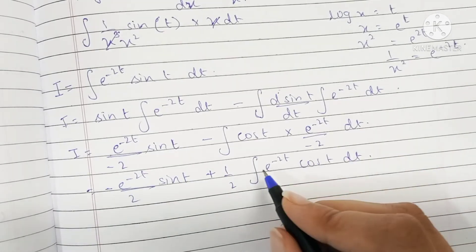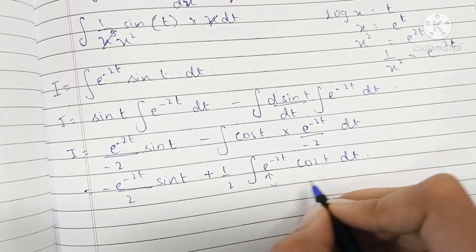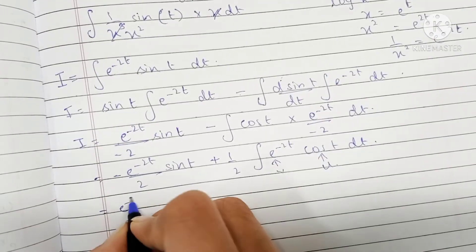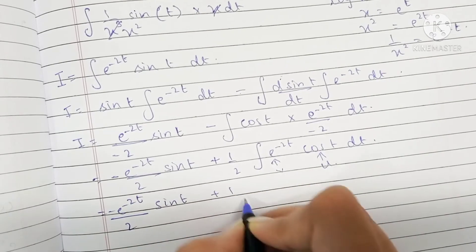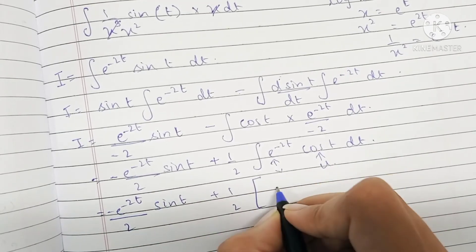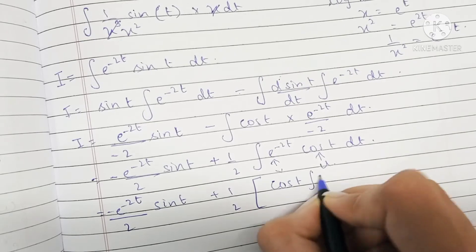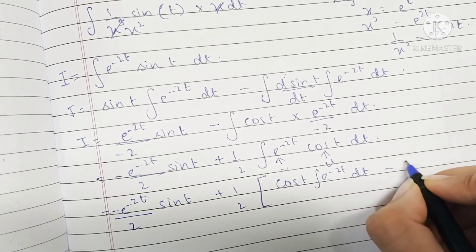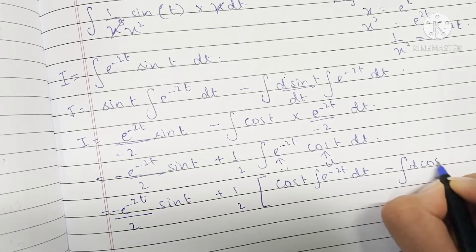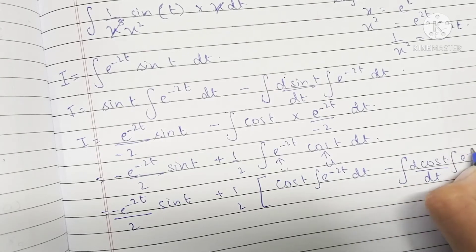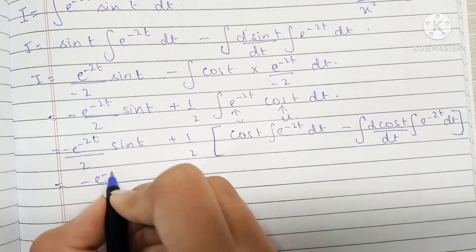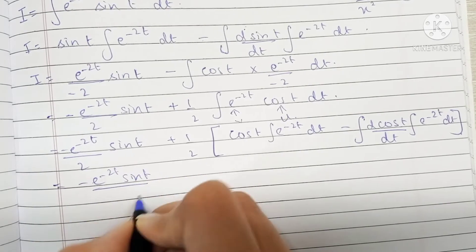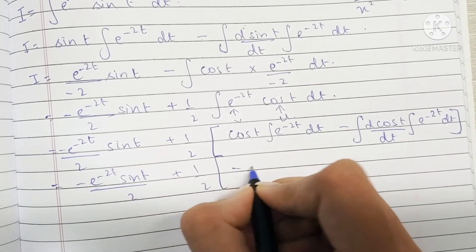We will solve this integral by parts again, placing cos t as u and e raised to minus 2t as v. This becomes minus e raised to minus 2t upon 2 times sine t, plus 1 by 2 times cos t times the integral of e raised to minus 2t, minus the integral of the differentiation of cos t times the integral of e raised to minus 2t.